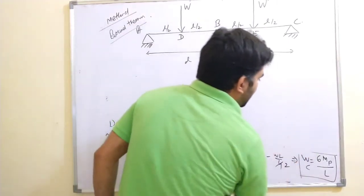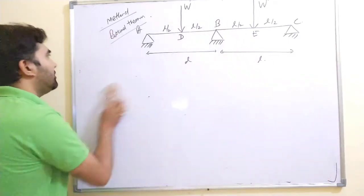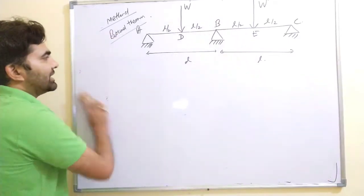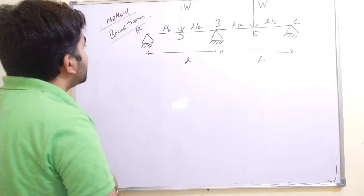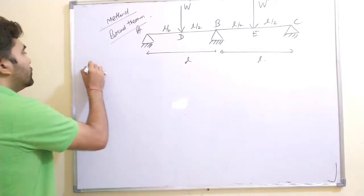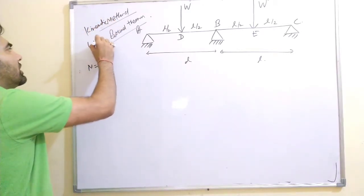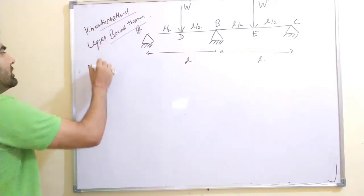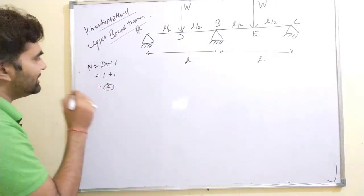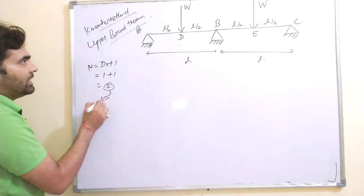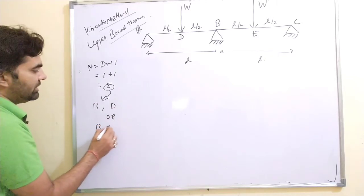Now for the kinematic method, which is also called the upper bound theorem. First, we need the minimum number of plastic hinges for complete collapse: ds plus 1 equals 1 plus 1 equals 2. Two plastic hinges are developed at point B and D, or B and E.